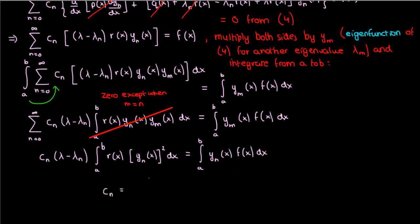So if we isolate c sub n, we'll finally end up with this equation for the unknown constant c sub n.